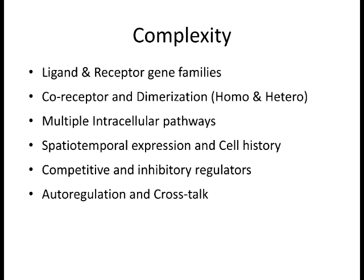An example is neurons finding their muscle or target destination. In some cases, the neuron receives a certain signal to go down its pathway, and then at a certain point that signal stops repelling it and actually attracts it, then repels it again. So it matters when, where, and the cell's overall history in how it will respond to the same signal transduction pathway.